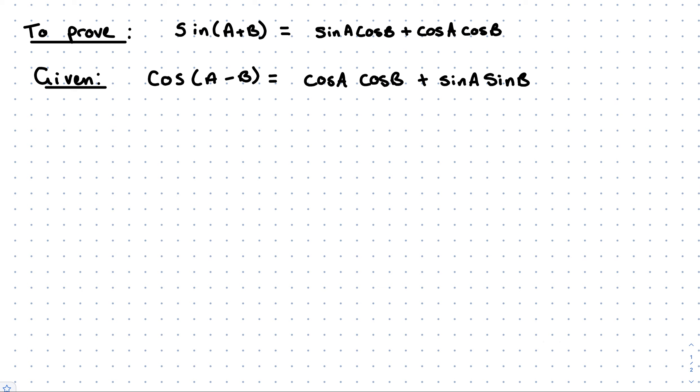In this video we're going to take a look at the proof of sine of a plus b, and you must start with the proofs that have come before that. The proof that we are allowed to use and build on is cos of a minus b. So what I have to do first is find the connection between sine and cos — how does one relate to the other? You need to know about complementary angles, and I have another video about that if you're not sure where this is coming from.